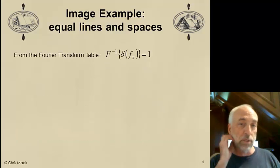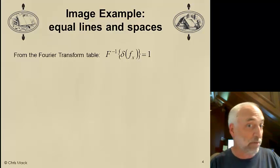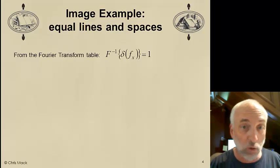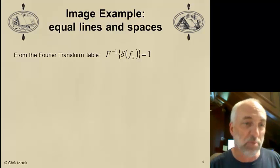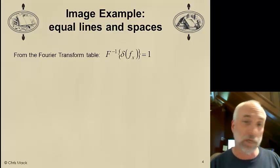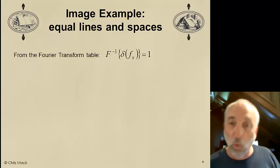Therefore, this is the diffraction pattern multiplied by the pupil function, which cuts out all the higher orders. Remember, our pupil function acts as a low-pass filter, filtering out all the high spatial frequencies, leaving only these three spatial frequencies in this case. Now, I simply have to take the inverse Fourier transform of this sum of three diffraction orders. So, how do I do that? Well, as I said, one of the advantages of Fourier transforms is we have a Fourier transform table.